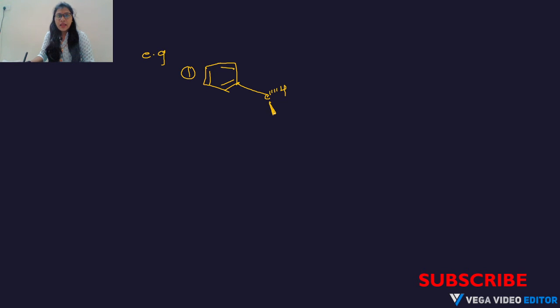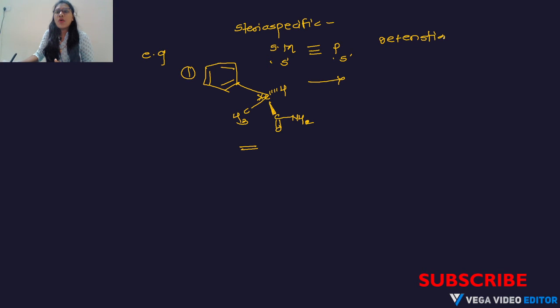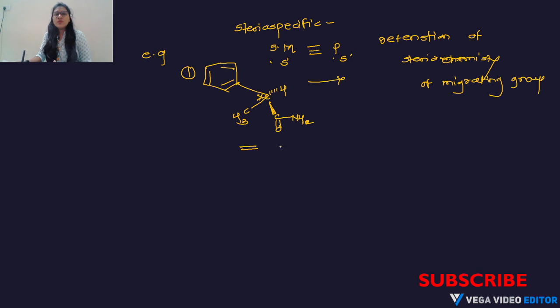Now we can see an example. The starting material has hydrogen below and the amide group above, with a CH₃ group. Hofmann rearrangement is stereospecific, meaning the stereochemistry of the starting material and product is the same. Here the configuration of the chiral carbon is S, and in the product we also get S — this is retention of stereochemistry of the migrating group.